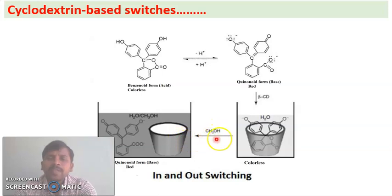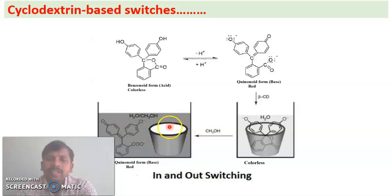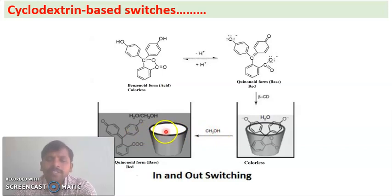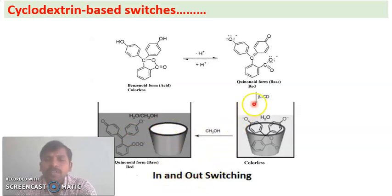When an organic solvent such as CH₃OH is added, the guest molecule previously included in the cyclodextrin cavity is excluded. This is the solvent effect — exclusion of the guest molecule from the cavity, which is switching out. So upon addition of beta cyclodextrin in water, switching in occurs, and upon addition of organic solvent, switching out occurs. This is in and out switching.